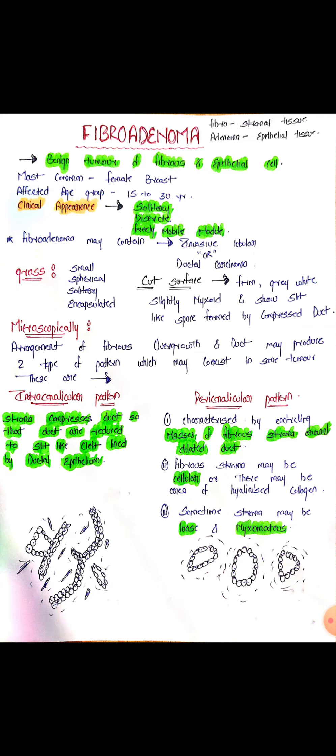Next is pericanalicular pattern. Here, the fibrous stroma around the duct proliferates, giving an oval duct-like appearance. Pericanalicular pattern is characterized by an encircling mass of fibrous stroma around dilated ducts. The proliferating fibrous stroma can be cellular or loose myxomatous in appearance.